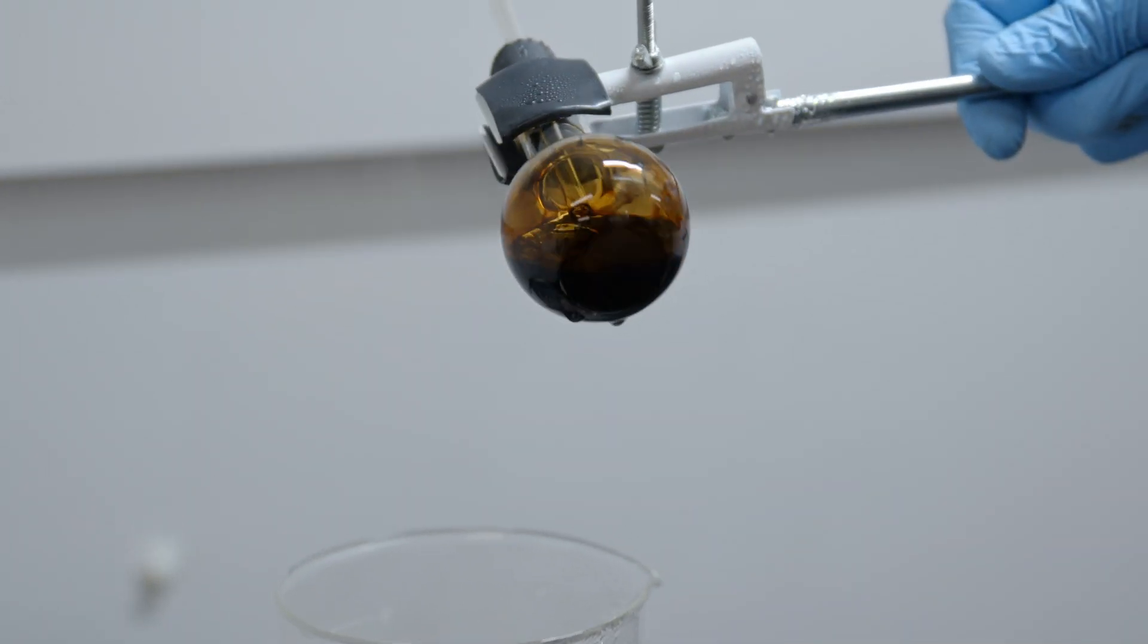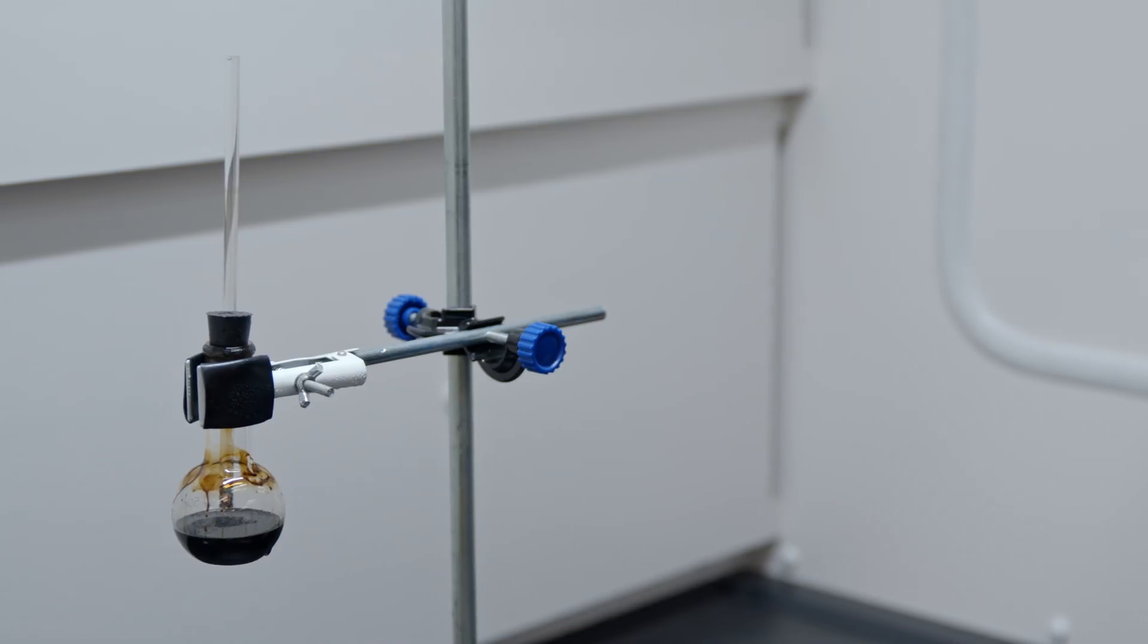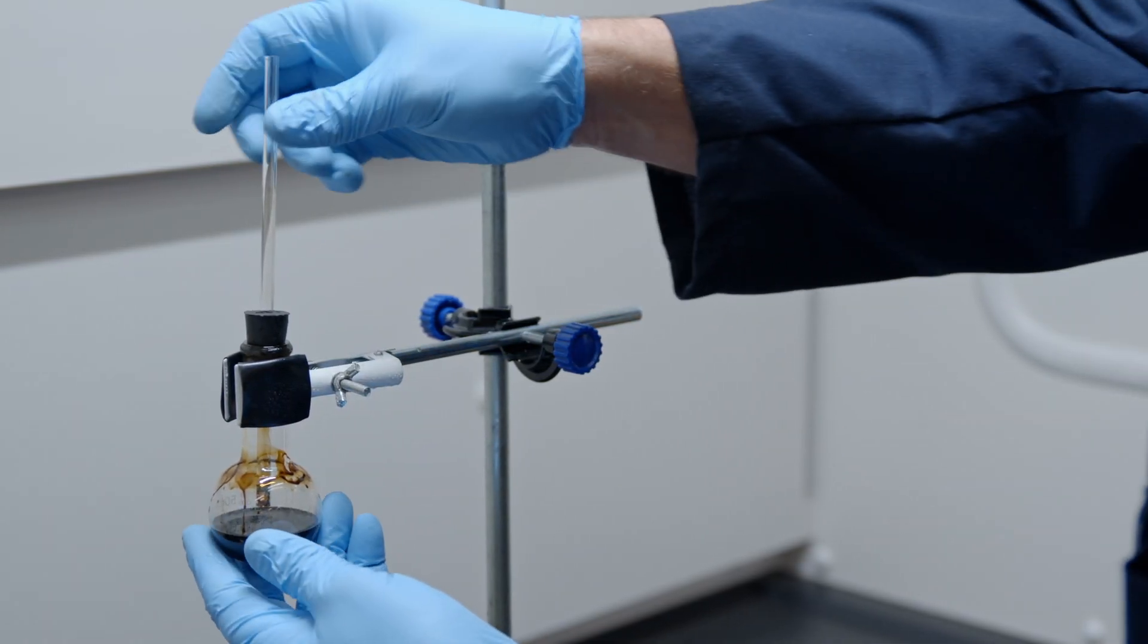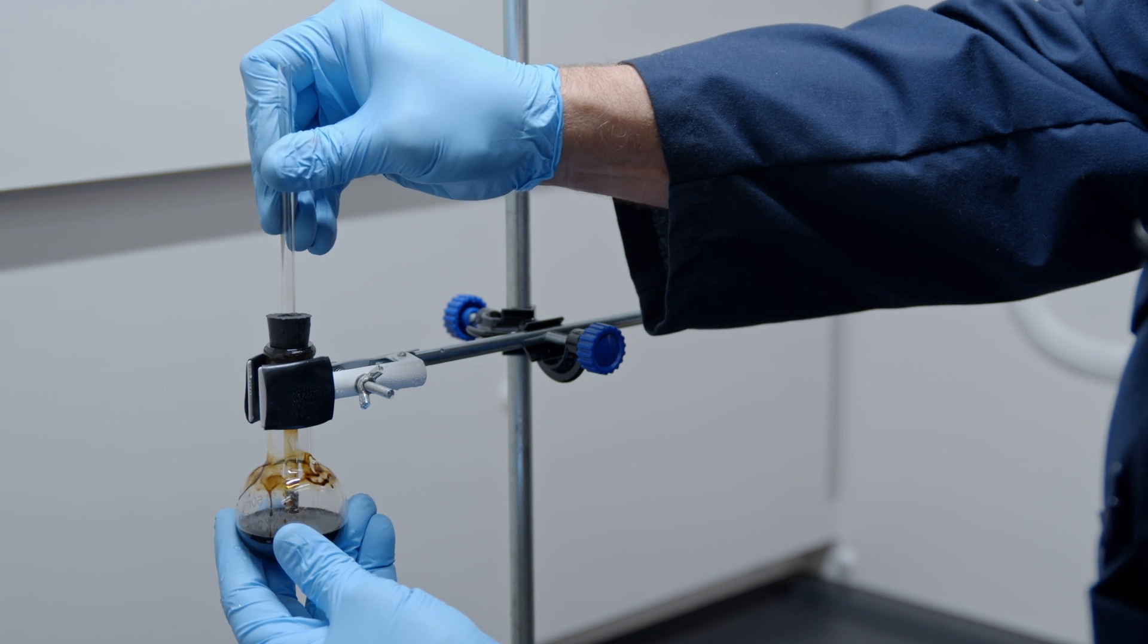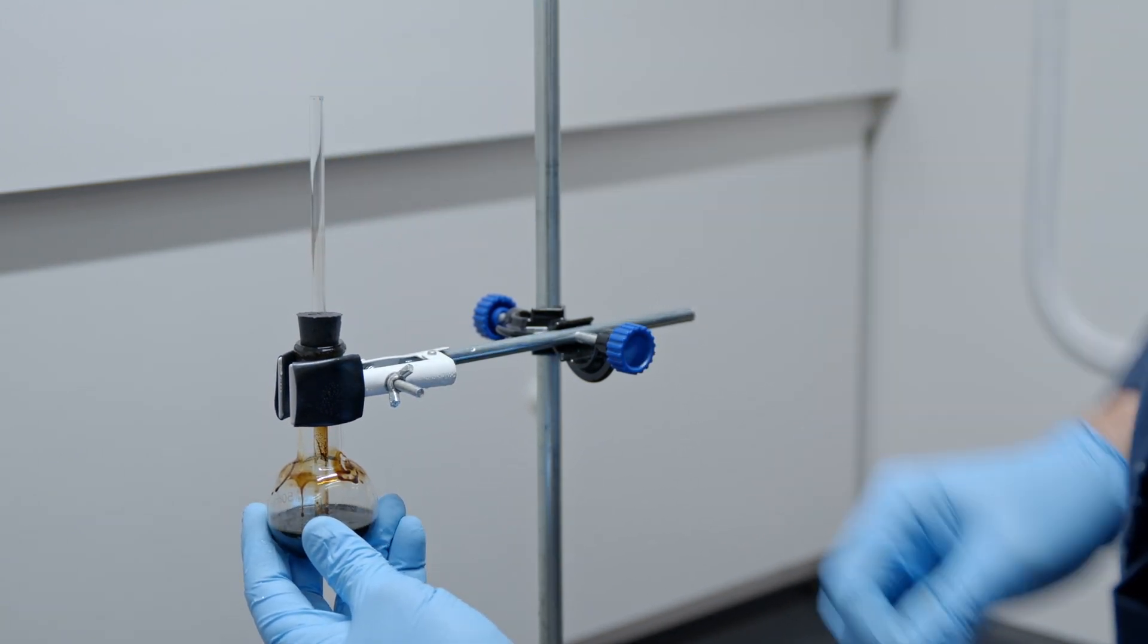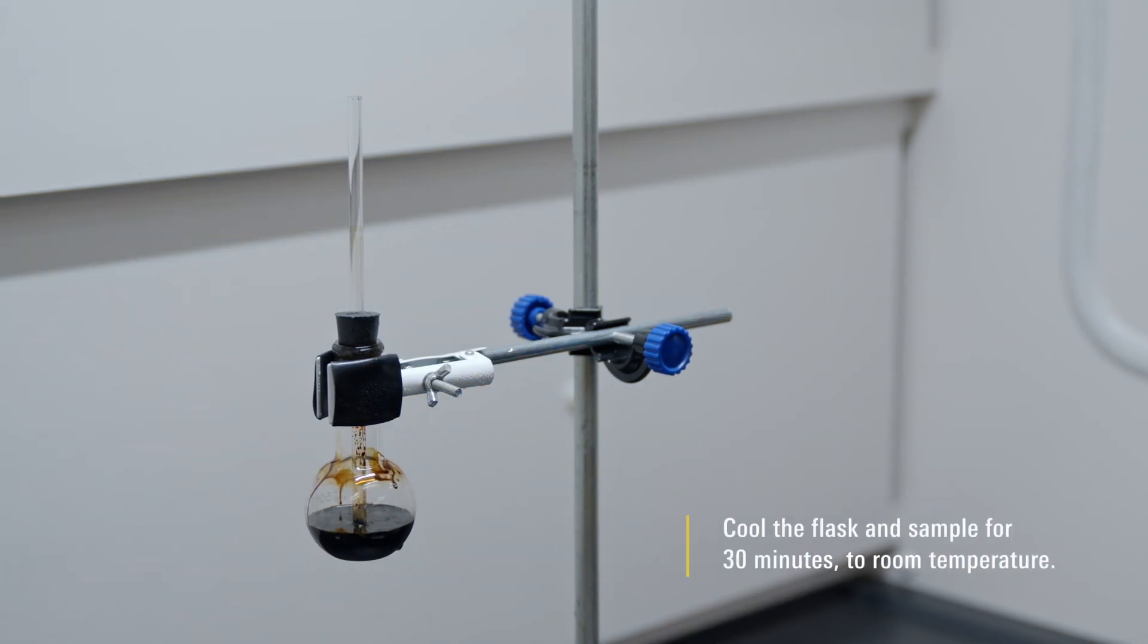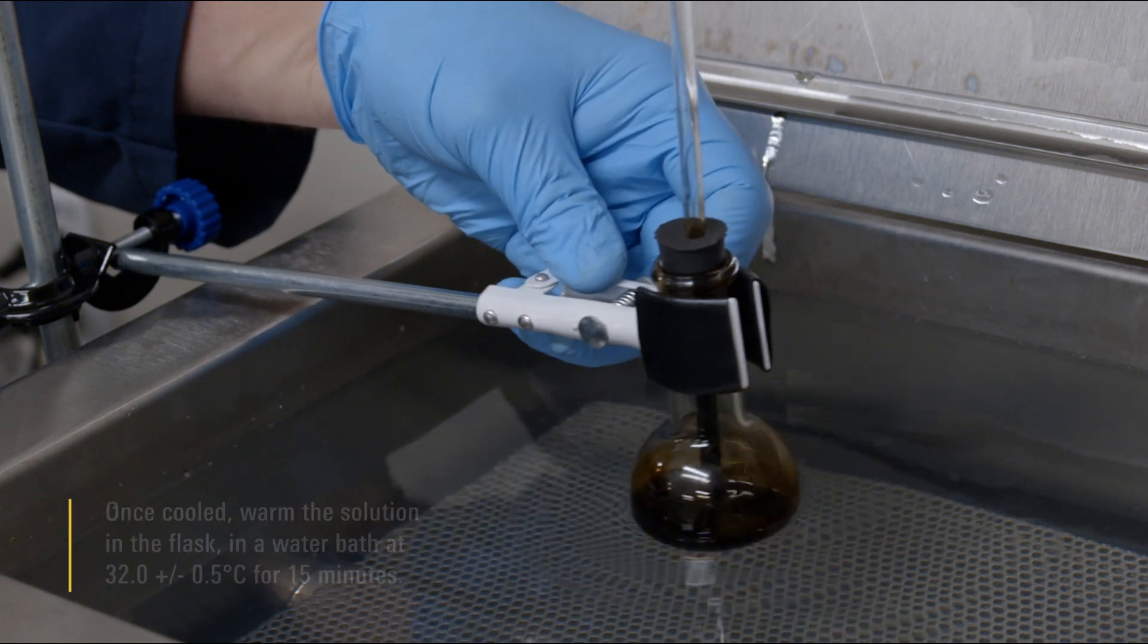Tilt the flask periodically to determine if the sample is fully dissolved. When the sample is fully dissolved, discontinue the boiling and swirling process. Lower the end of the glass tube below the level of the solution in the flask. Cool the flask and sample for 30 minutes to room temperature.